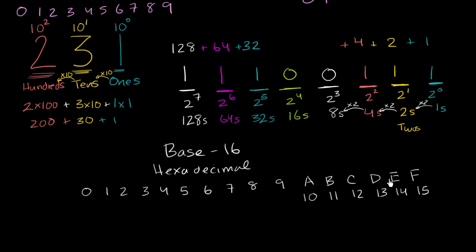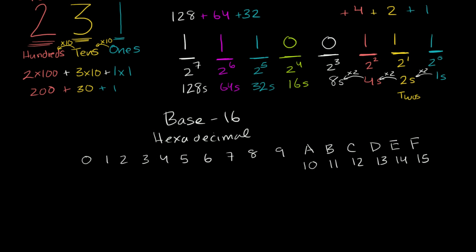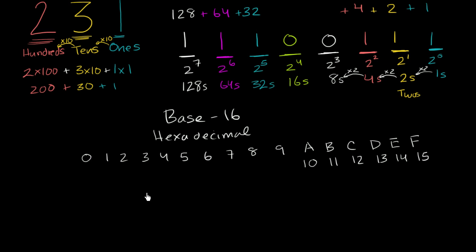Now, how does that help? Let's see if we can represent the number 231 in decimal as the same number in hexadecimal. I'll show you the place value and how we convert it. So 231 in decimal is the number E7 in hexadecimal. In base 16, what do these place values represent? The first place represents 16 to the zero power — the ones place. This is seven ones.